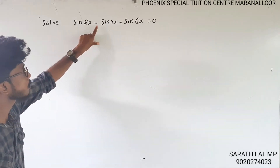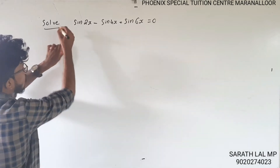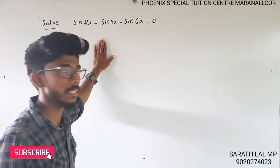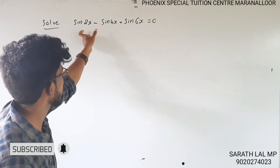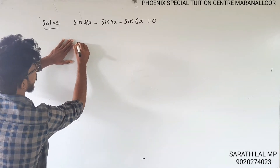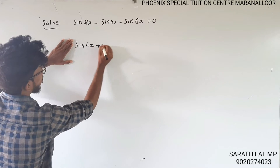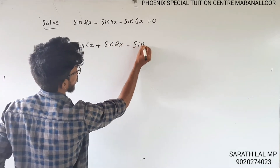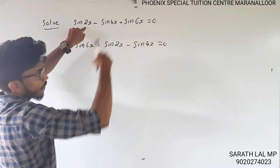Now a different question: solve sin2x - sin4x + sin6x = 0. We rearrange this as sin6x + sin2x - sin4x = 0, because we need to add the 6 and 2 terms and apply the sum formula.